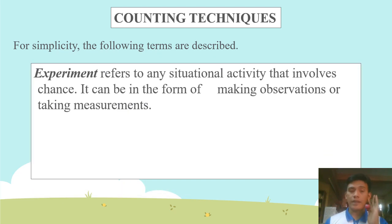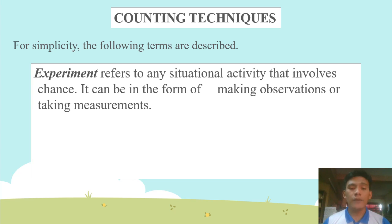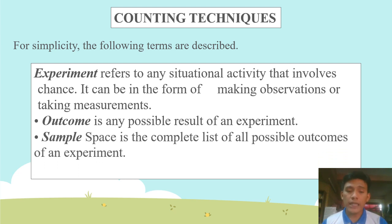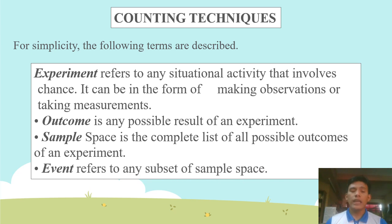First, experiment — refers to any situational activity that involves chance. It can be in the form of making observations or taking measurements, to be exact. Outcome — is any possible result of an experiment. Sample space — is the complete list of all possible outcomes of an experiment. Event — refers to any subset of a sample space.